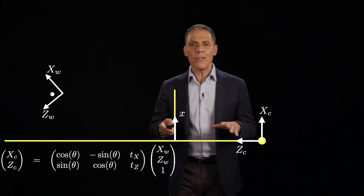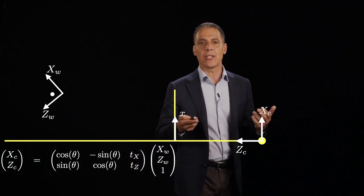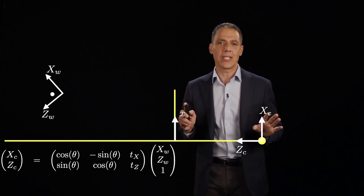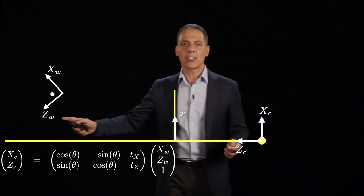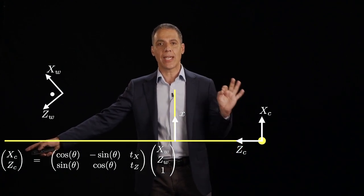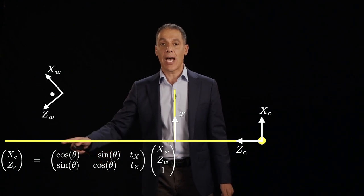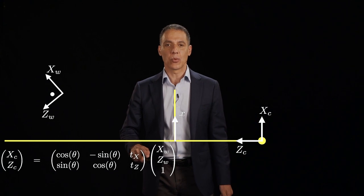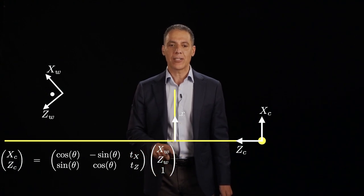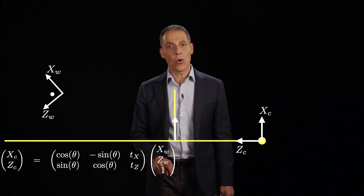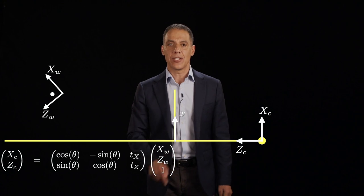One thing that's annoying about that notation is I have to carry around a rotation matrix and a translation vector. We can bundle those together using homogeneous coordinates — just an algebraic nicety to model everything with a single matrix. So XC, ZC equals the rotation matrix times the world coordinate point XW, ZW, but now I've added a 1 to that world vector. That homogeneous coordinate 1 will multiply the TX and TZ to give the addition.